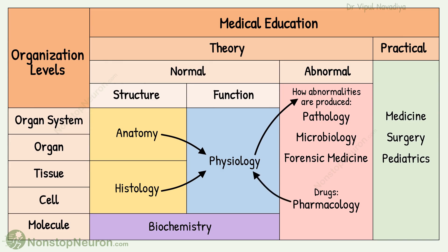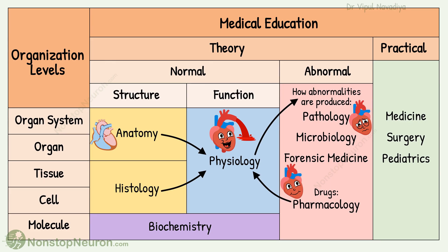Let's take the heart as an example. In anatomy, we study its structure. After that, we can study how it works in physiology. Then using all this knowledge as a base, we can study how the heart functions may become abnormal in pathology, and ways to bring it back to normal in pharmacology.